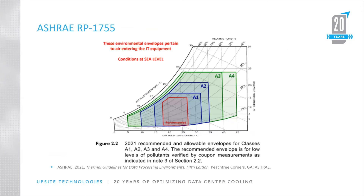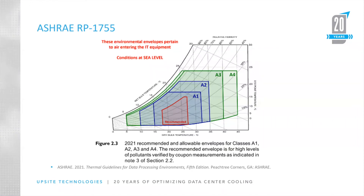Here is an excerpt from the updated thermal guidelines showing the scenario where corrosion rates are low. You can see that the upper relative humidity corner of the recommended range is now up at 70%. Compare that to the recommended range when you detect high levels of pollutants and therefore corrosion, and you can see that relative humidity has been lowered down to 50% — taking a pretty healthy chunk out of the cooler, damper area of the recommended range. That was really the primary outcome of Research Project 1755. The research itself was far from simple and extremely interesting, but this is the primary functional takeaway for the design and operation of your facility.